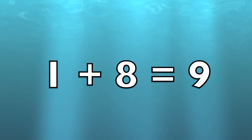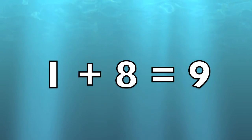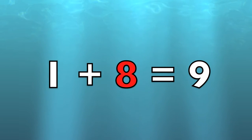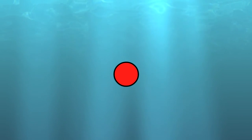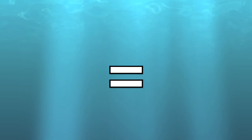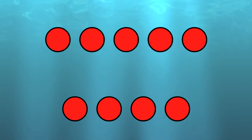One plus eight equals nine. One circle plus eight circles equals nine circles.